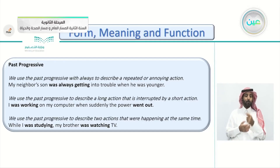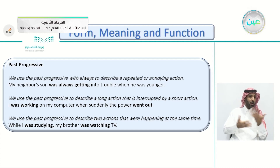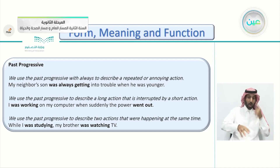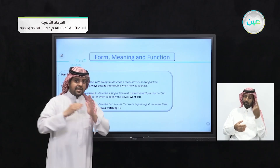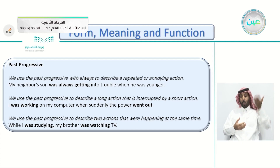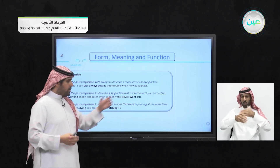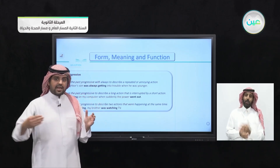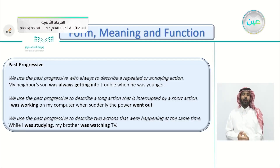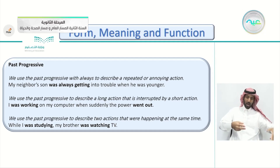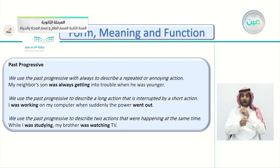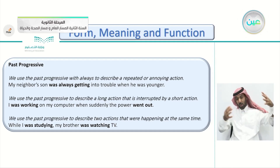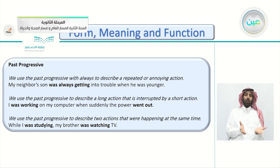Another use: we use the past progressive to describe a long action that is interrupted by a short action. For example: 'I was working on my computer when suddenly the power went out.' The first action — 'I was working on my computer' (past progressive, the long action) — was interrupted by the short action of the power going out. So the past progressive describes the ongoing action, while the simple past describes what interrupted it.